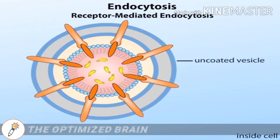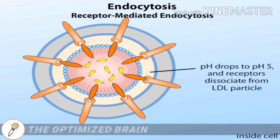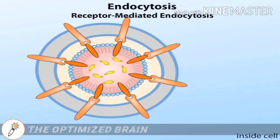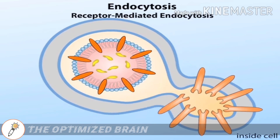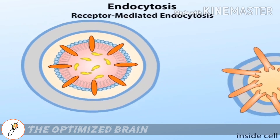Another vesicle then fuses with the LDL-containing vesicle, causing the pH inside to drop and forcing the receptors to dissociate from the LDL particle. After the receptors are released from the LDL particle, the vesicle fuses with a lysosome.